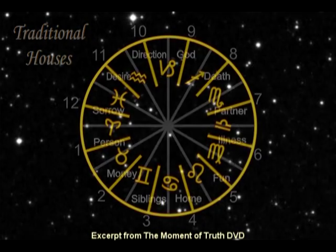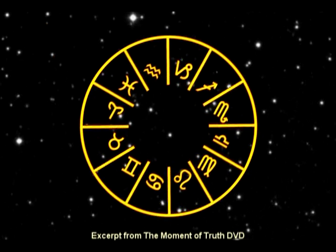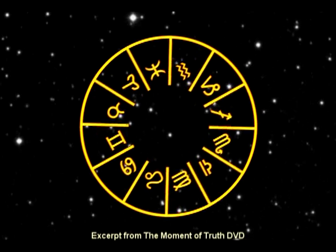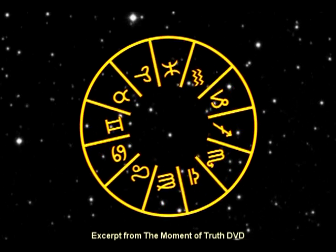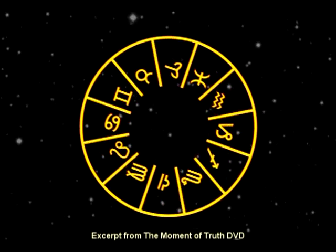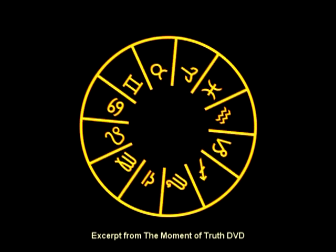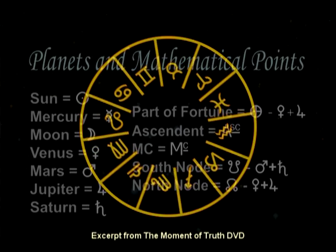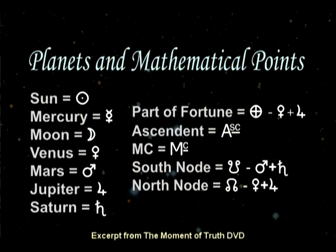There are the 12 signs of the zodiac that act like adjectives to change the meaning of each house throughout the day. And the seven planets, plus five mathematical points — namely the north and south node, the ascendant, midheaven, and part of fortune.